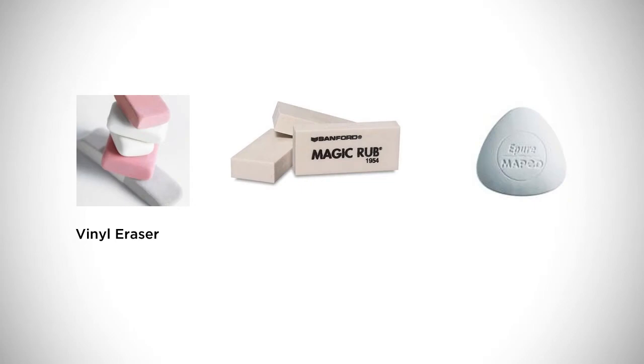The second type of eraser that you should probably have with you is called a vinyl eraser, and this is more what you're used to from the back of your pencil. This is a harder eraser that'll take more of the graphite off the paper at a time.